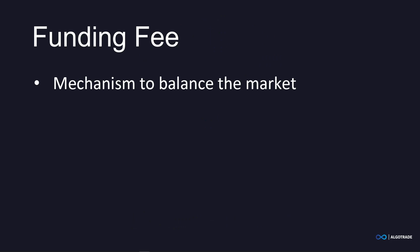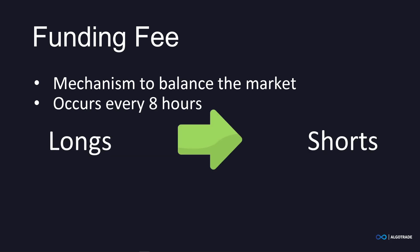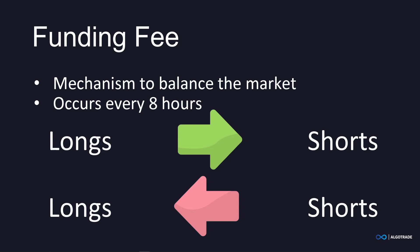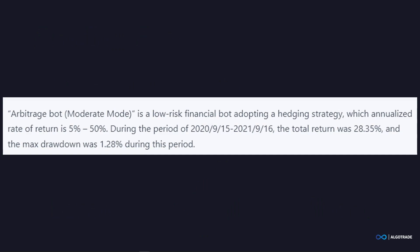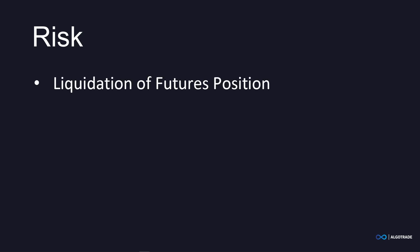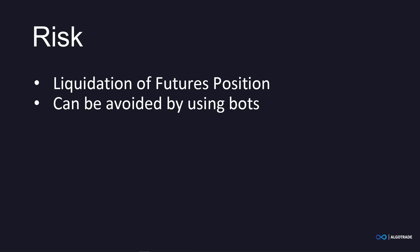The funding fee is a mechanism set up to balance the futures market. It occurs every eight hours and, depending on the current rate, either all long positions have to pay short positions or vice versa. By default, short positions receive a small profit every eight hours, making this a realistic arbitrage opportunity. Case studies show that you can make between 15% and 50% profit annually with almost no risk. The only risk you face is the liquidation of your futures position, which would require paying a liquidation fee that lowers your overall profit. However, with the use of bots, you can avoid this fee as the bot will stop automatically if the price nears liquidation.